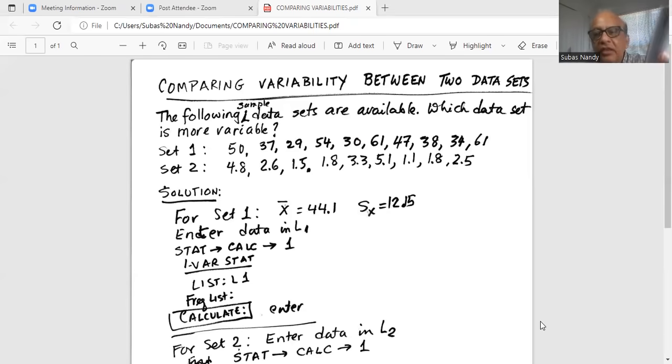So I change the first line list to L2 by pressing second and then two, second button and then two. Now it becomes L2. I go to calculate, bring the cursor down on calculate and hit enter.